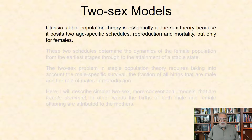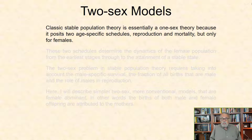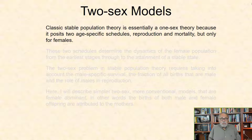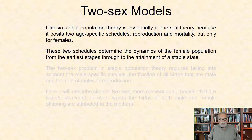Classic stable population theory is essentially a one-sex theory because it posits two age-specific schedules — reproduction and mortality — but only for females. These two schedules determine the dynamics of the female population from the earliest stages through attainment of a stable state.